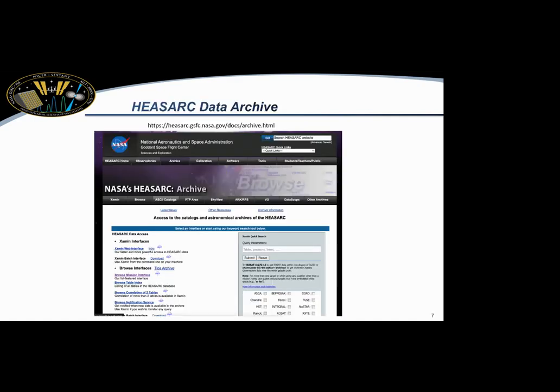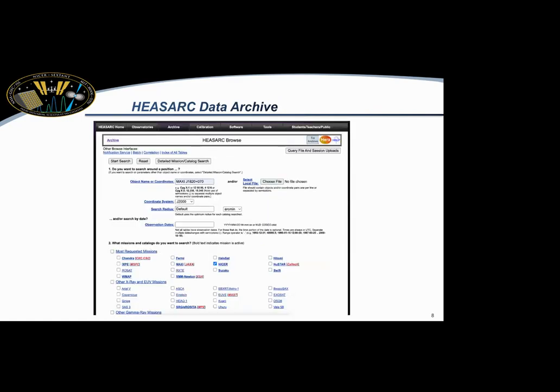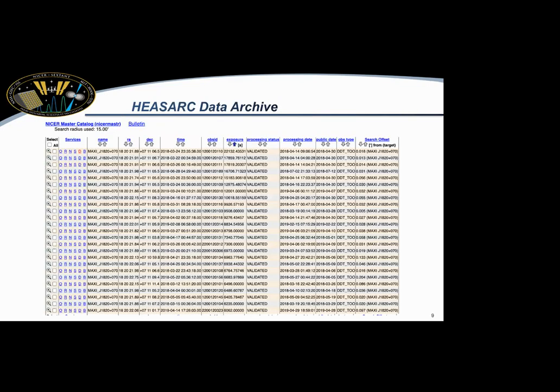But we'll start with how you access NICER data. So Sunil covered most of this, which is just a brief reminder. You have the HEASARC data archive. You can select the NICER box here, put in whatever your favorite target is. Here I put in MAXI J1820, which is a bright black hole binary that went off first a few years ago. And then we'll pull up all of the observations for your particular target. So here you see a lot of information like the RA and DEC, the time of the observation, the exposure time of the observation, and offset. The last column shows how offset the pointing was from the target that you wanted to observe.